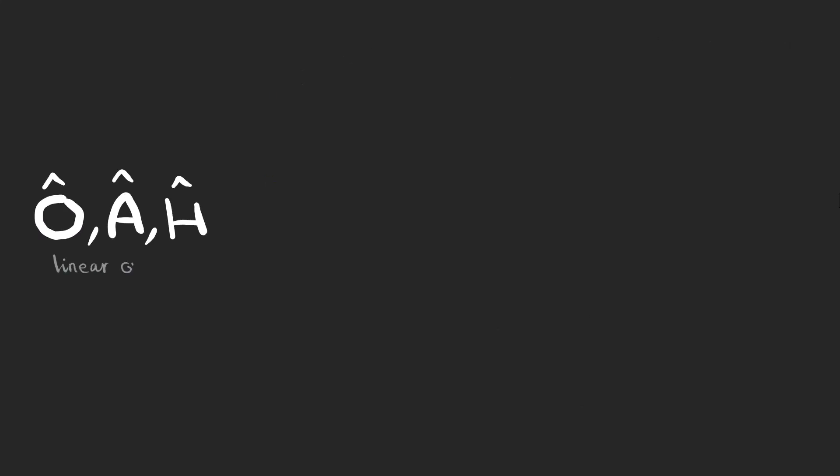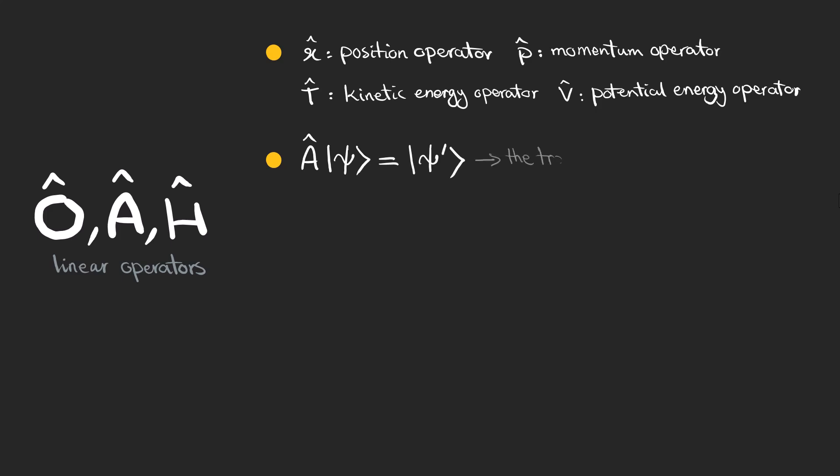We also have other linear operators in quantum mechanics. A linear operator can represent various physical observables, like position, momentum, or energy. And when it acts on a ket, it transforms the ket into a new quantum state. The resulting state psi prime is determined by the operator A and what it represents in the physical system. For example, if A is the momentum operator, acting on psi gives you information about the momentum of the state psi.